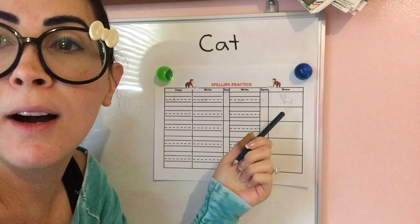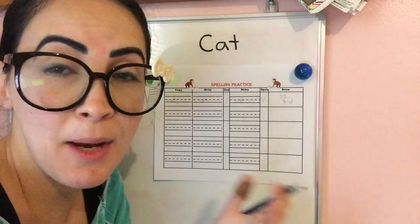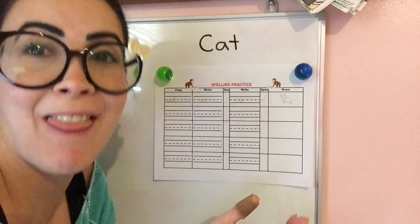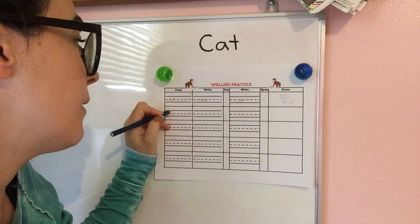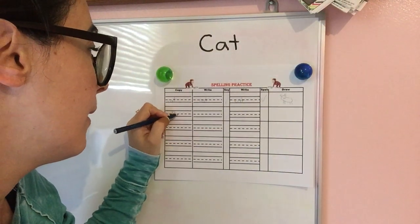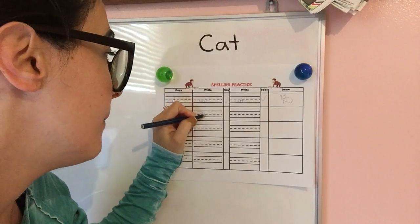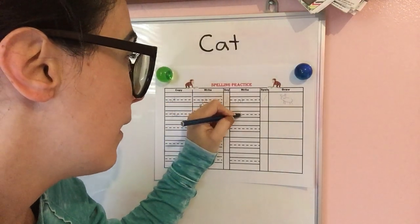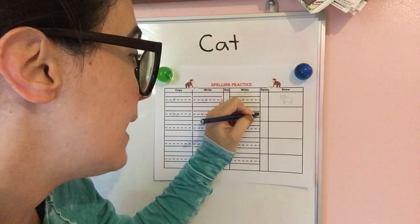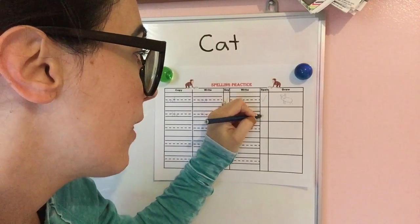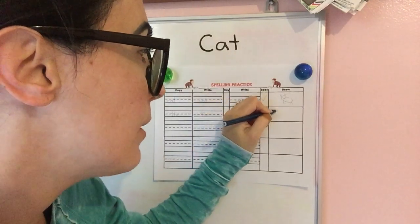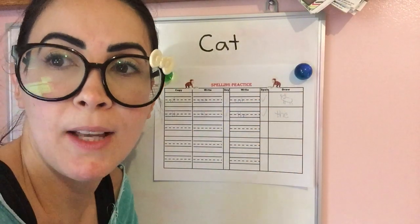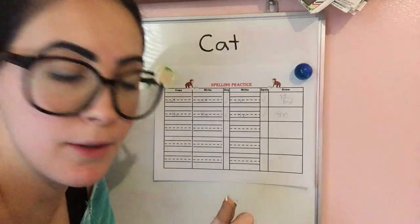But if the word is a sight word and there is no picture for it — let's say the word is 'the' — they're writing the word 'the', they wrote it again, they said it, they spell T-H-E spells 'the'. I would just have them write 'the' again. That's the drawing of the word.